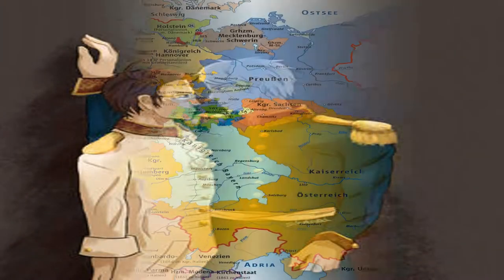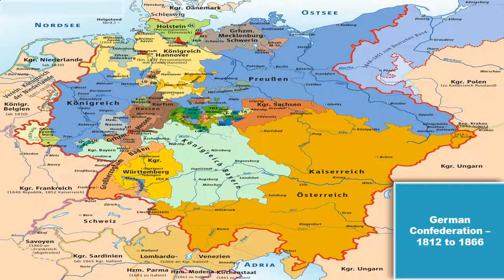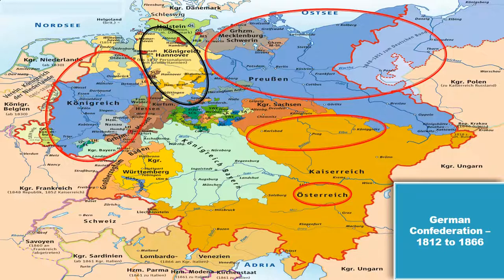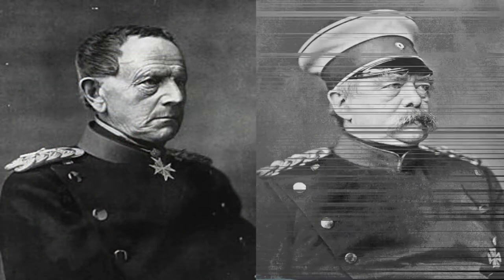There were certain geographical disadvantages for Prussia in case of war with Austria. On one hand, most of the German states rallied to Austria instead of Prussia. On the other hand, Prussia's own territory was divided into two — Eastern and Western Prussia — with the state of Hannover interposed between the two parts. Moreover, Bohemia presented an ideal launching pad for an Austrian attack against the Prussian capital Berlin. But all these difficulties were no match for the Prussian general staff, General Moltke the Elder, and Bismarck's strategic wisdom.